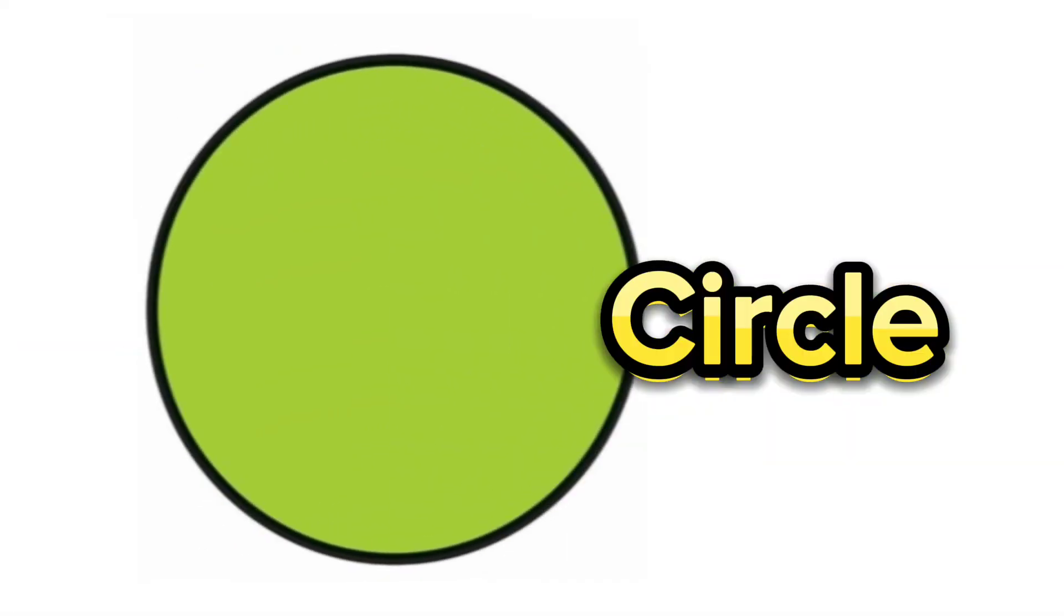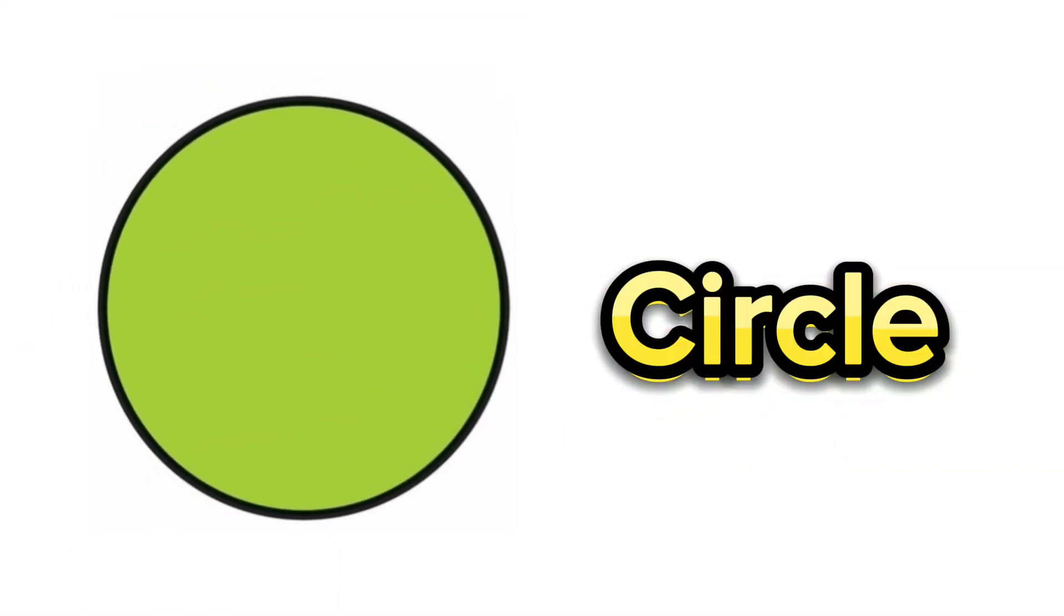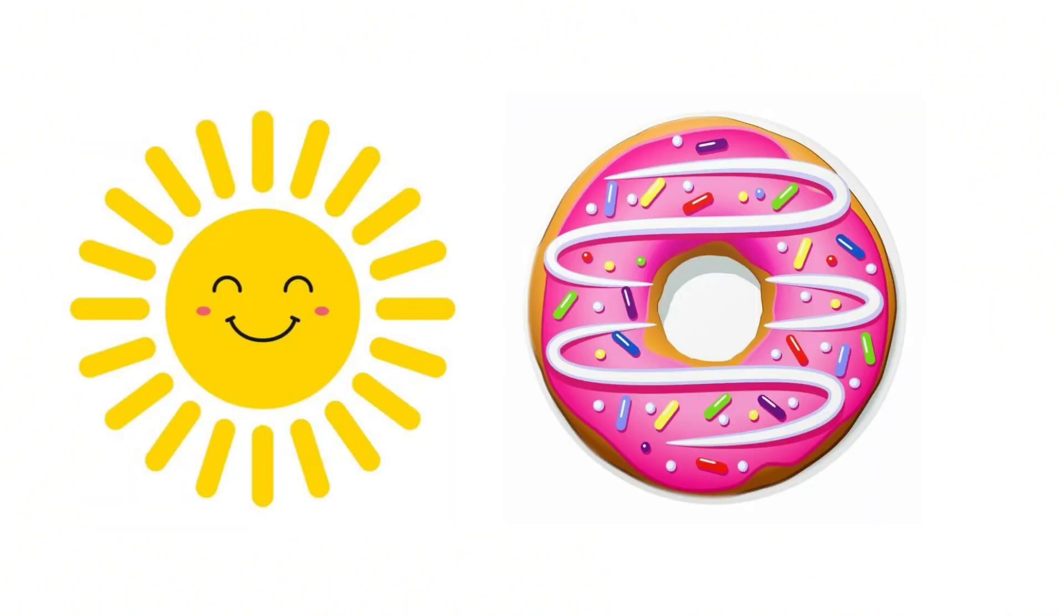First we have circle. A circle is a shape that is made up of a curved line. It is round. Examples of circle objects are sun and donut. Do you like donut? Me too.